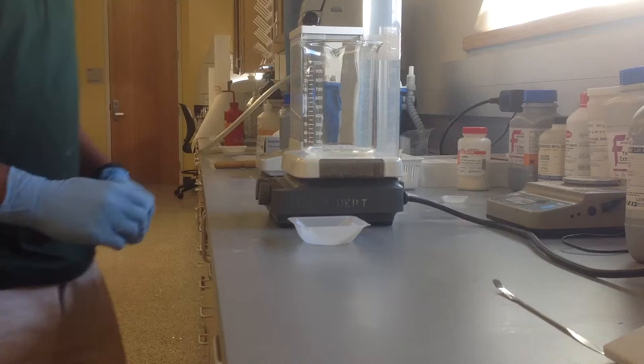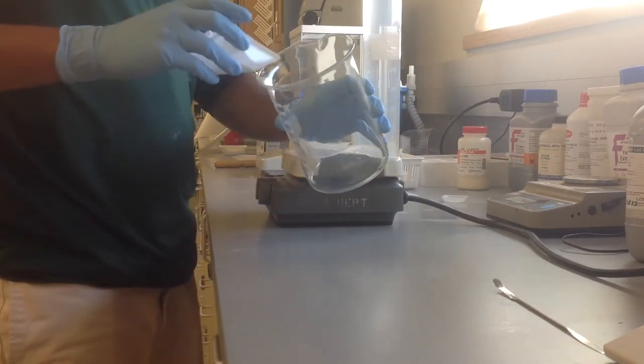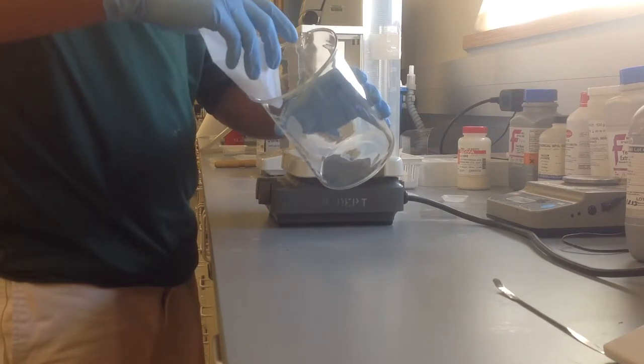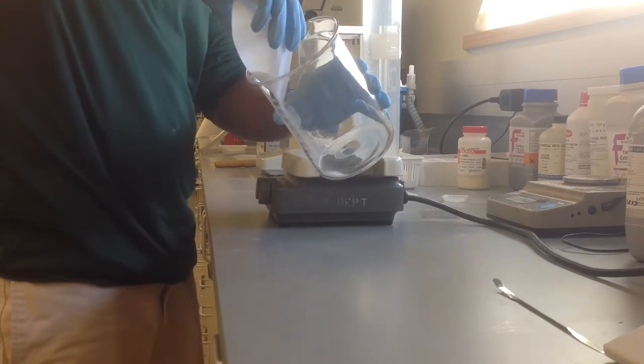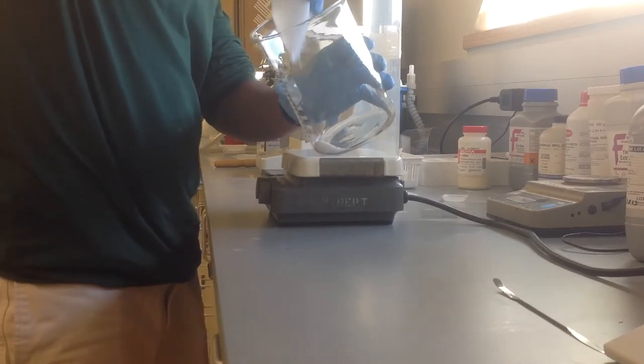Okay, Danny. So now I've weighed out my tris solid. What's the next step? Next, we need to dissolve that solid into solution. So first, we're going to pour that into a large glass beaker. Be careful to wipe it on the sides to get all the solid pieces in the weigh boat.